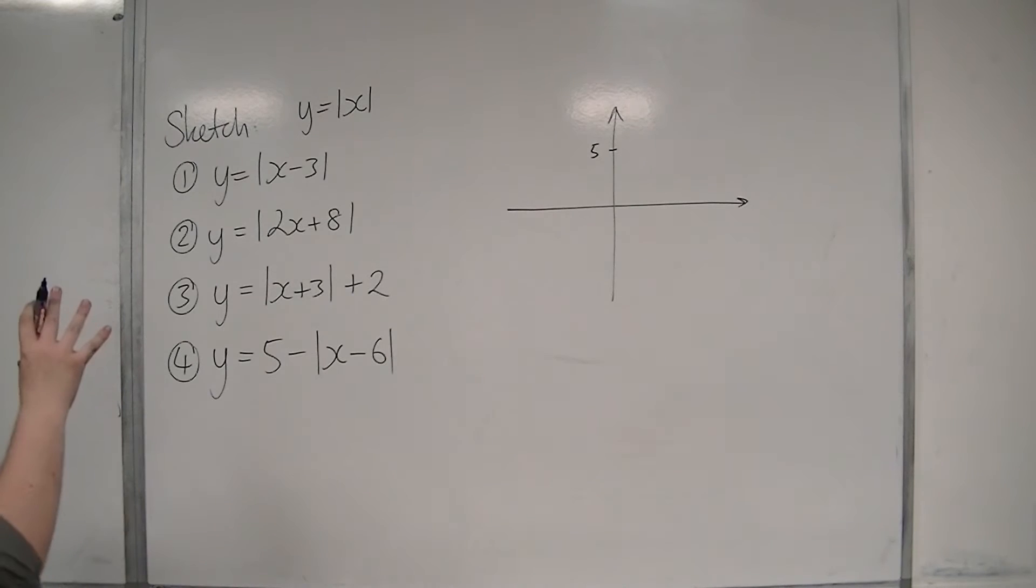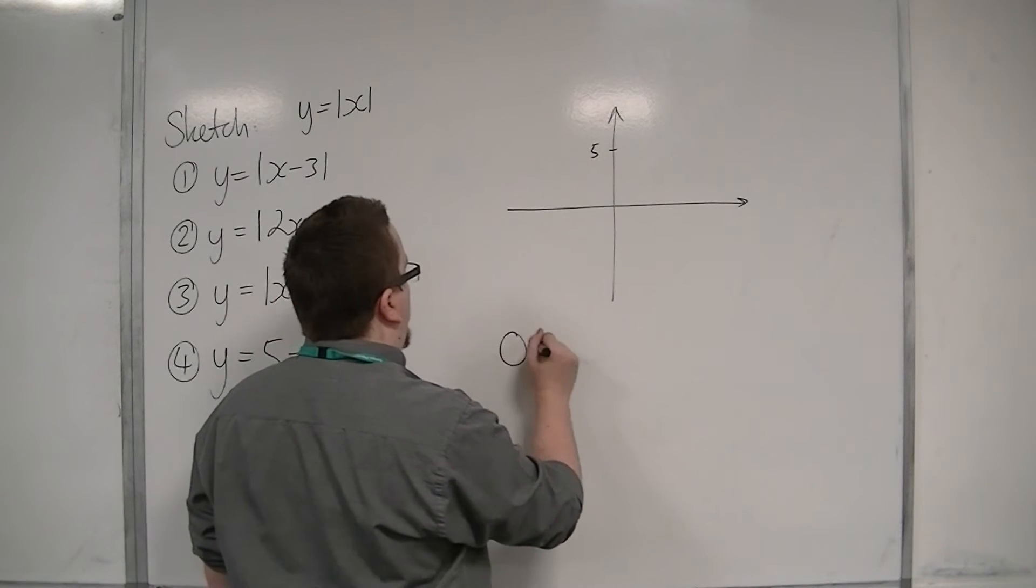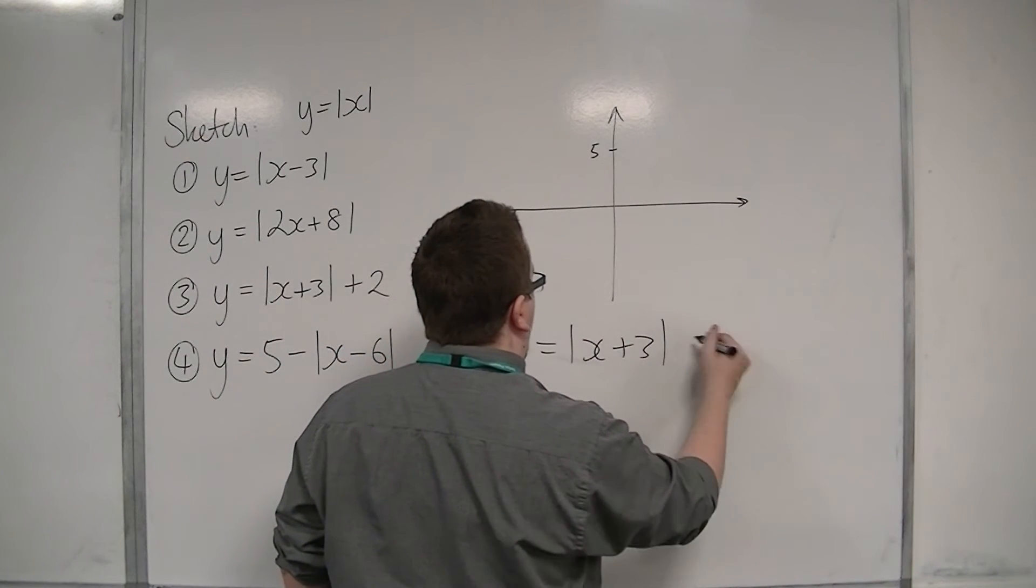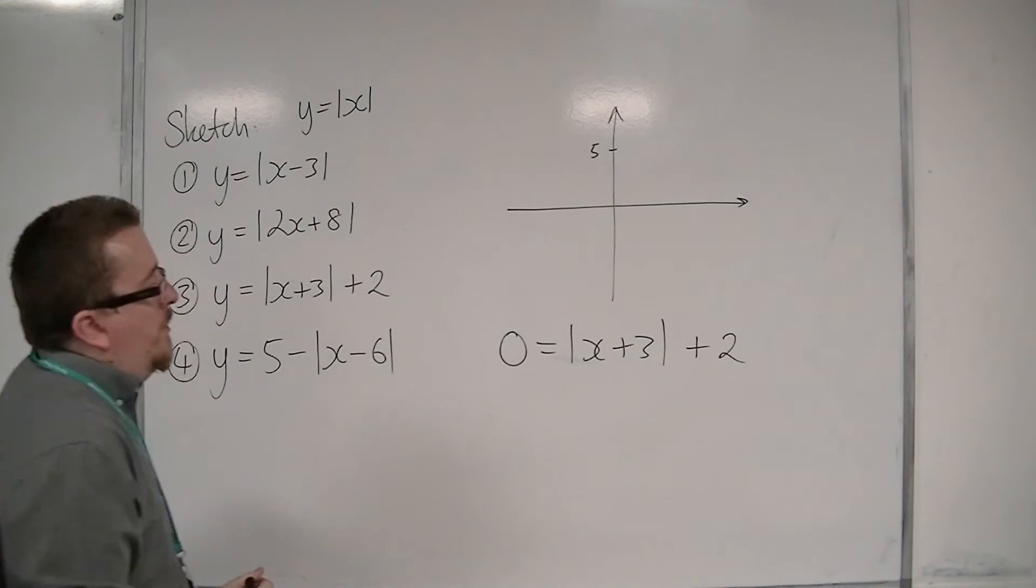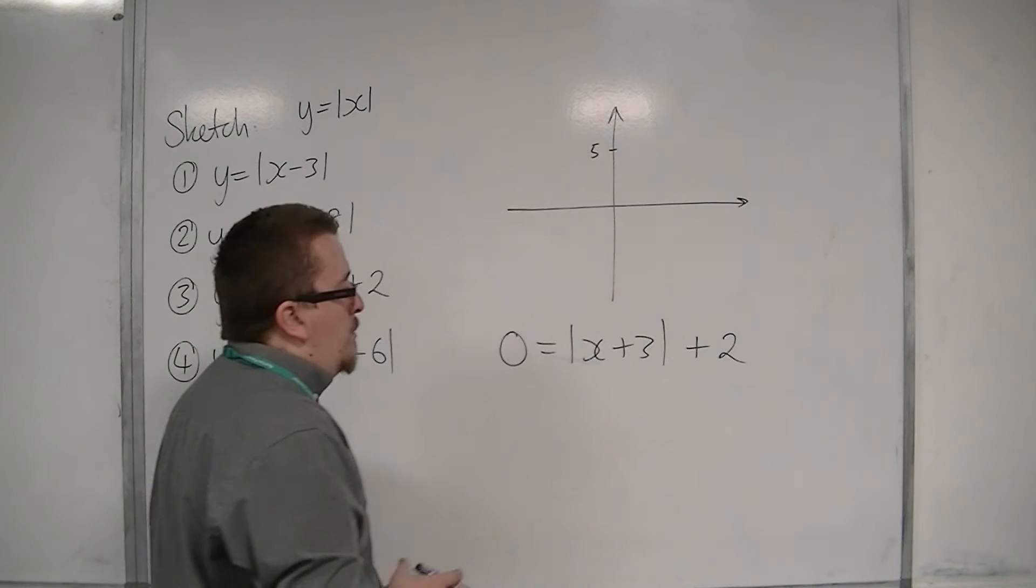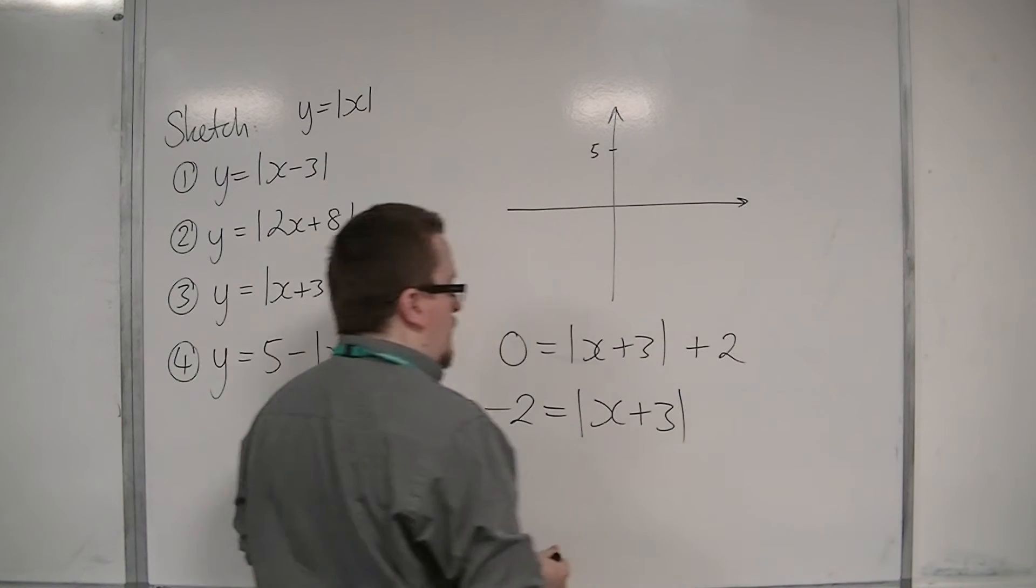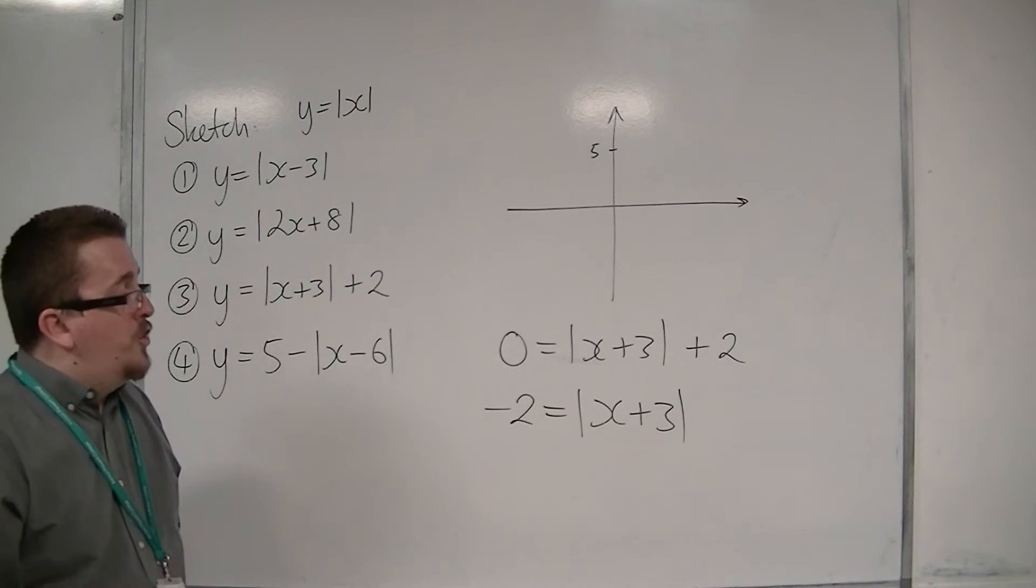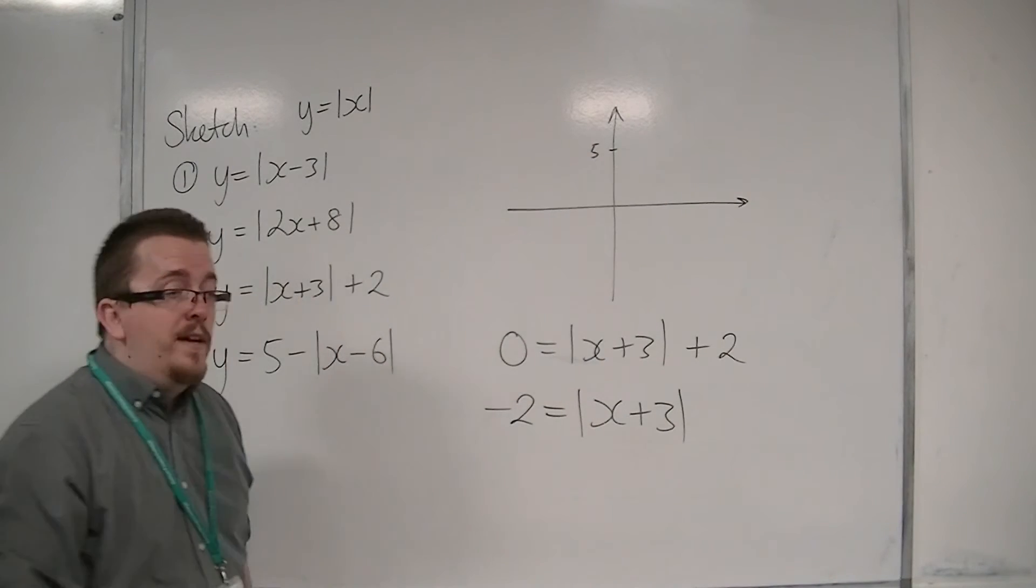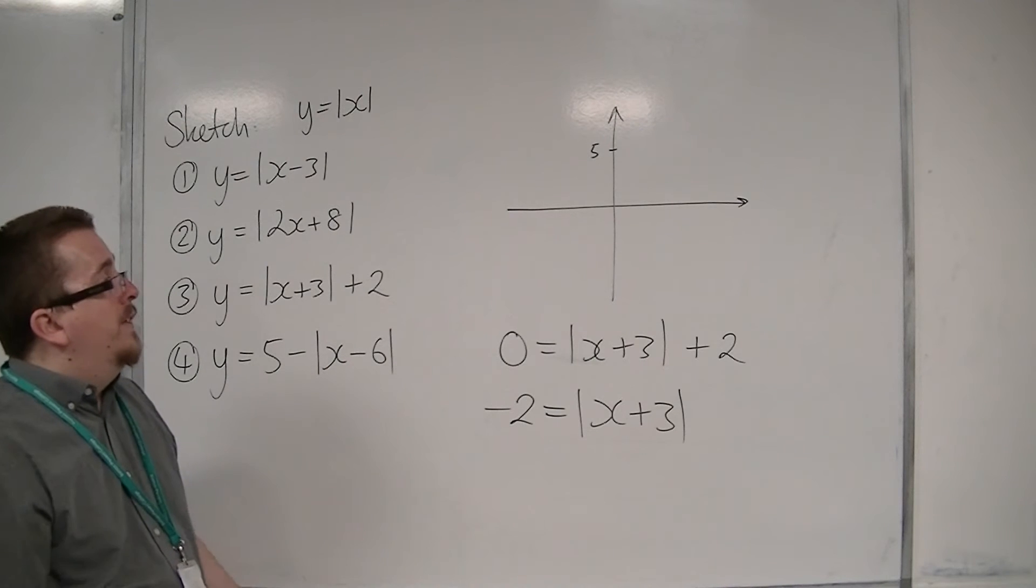And when y is zero, we get something interesting happening. So zero equals mod x plus 3 plus 2. That must mean that in order for this to be zero, the modulus of x plus 3 would have to be minus two. But the modulus of x plus 3 has to be positive. It can't go negative. And so that means it doesn't cross the x-axis.